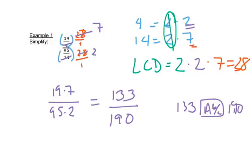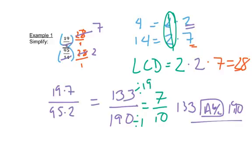Actually, I was wrong — it's a good thing we checked it. When I typed this into my calculator, it gave me 7 over 10. That meant that both 133 and 190 could be divided by 19. So let your calculator help you.